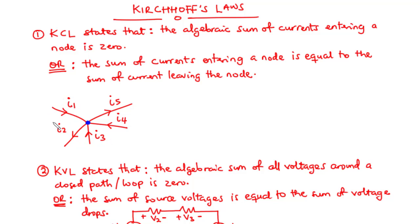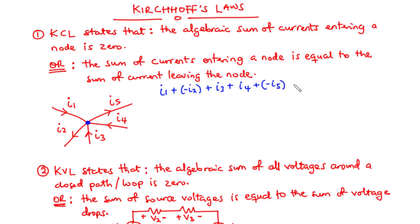Let's start off with i1. i1 is entering the node, so that is a positive value. i2 is leaving, so negative i2. i3 is entering, so positive i3. i4 is also entering, so we have positive i4. i5 is leaving, so negative i5. The algebraic sum of all these terms should be equal to zero.